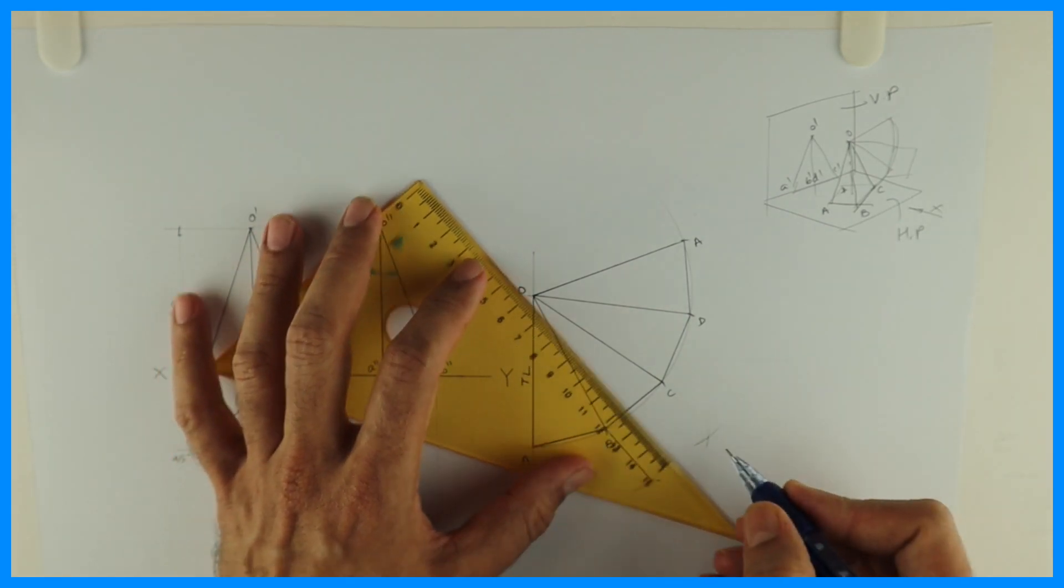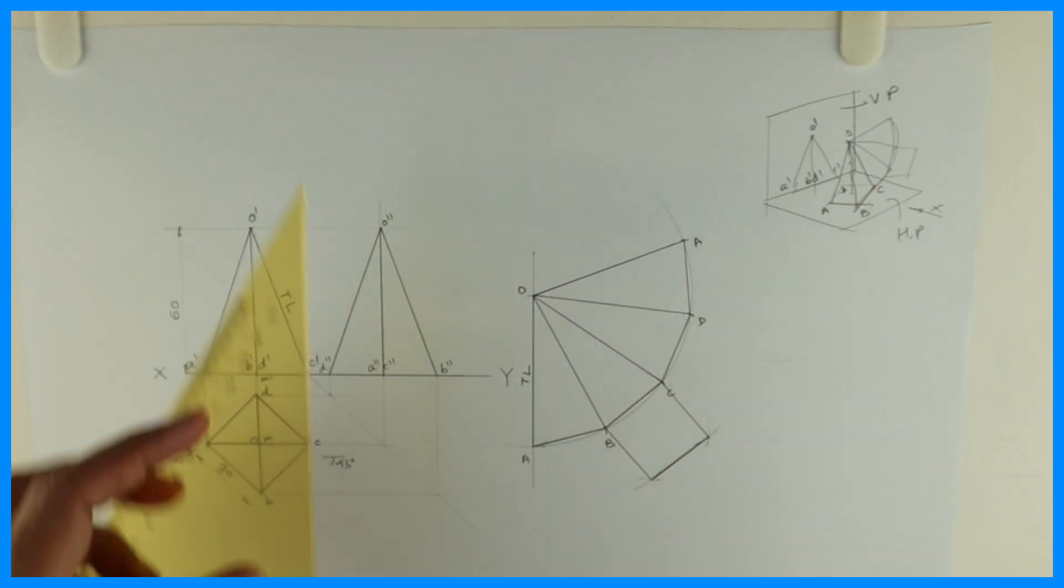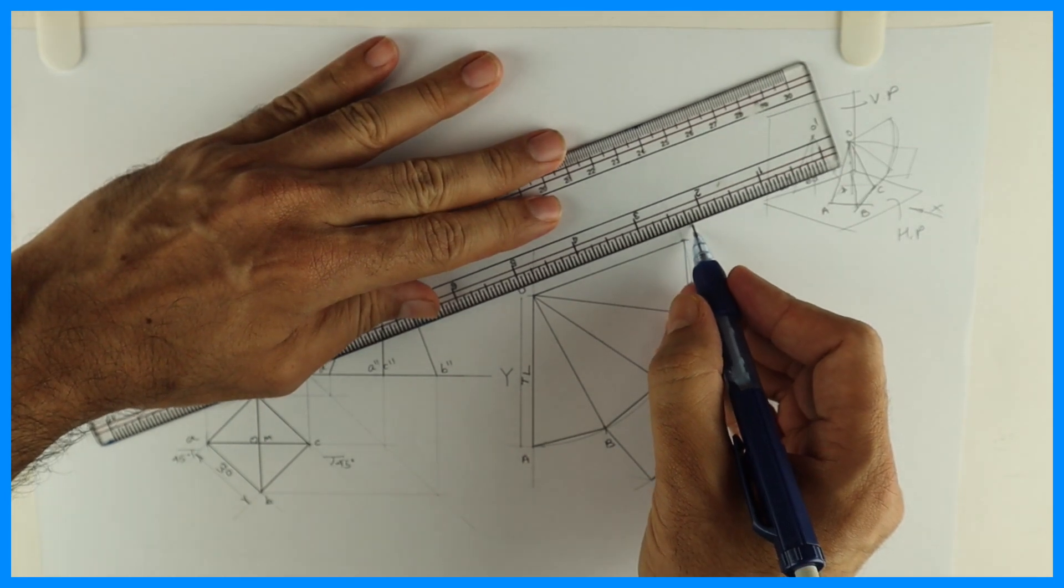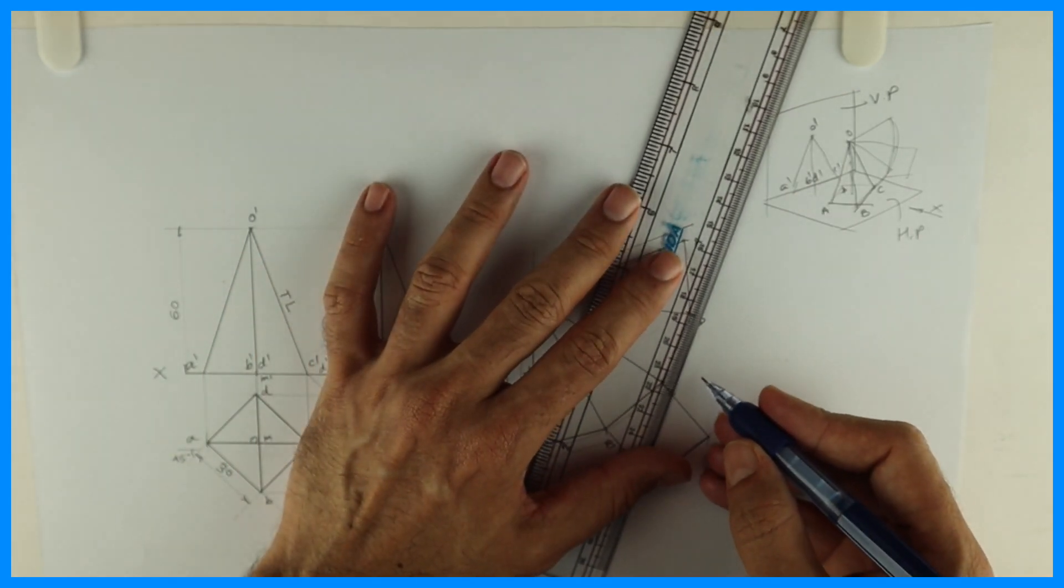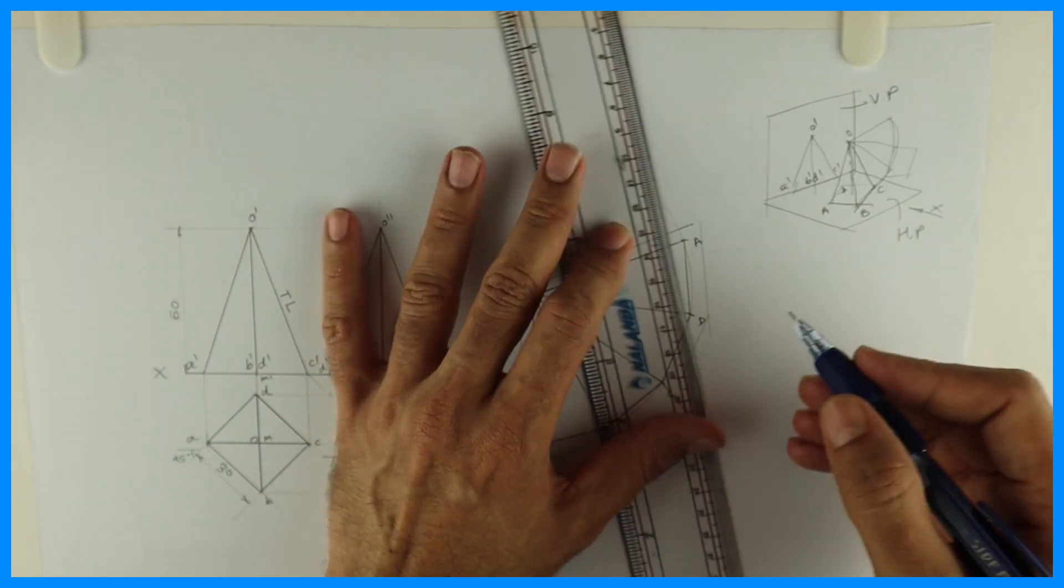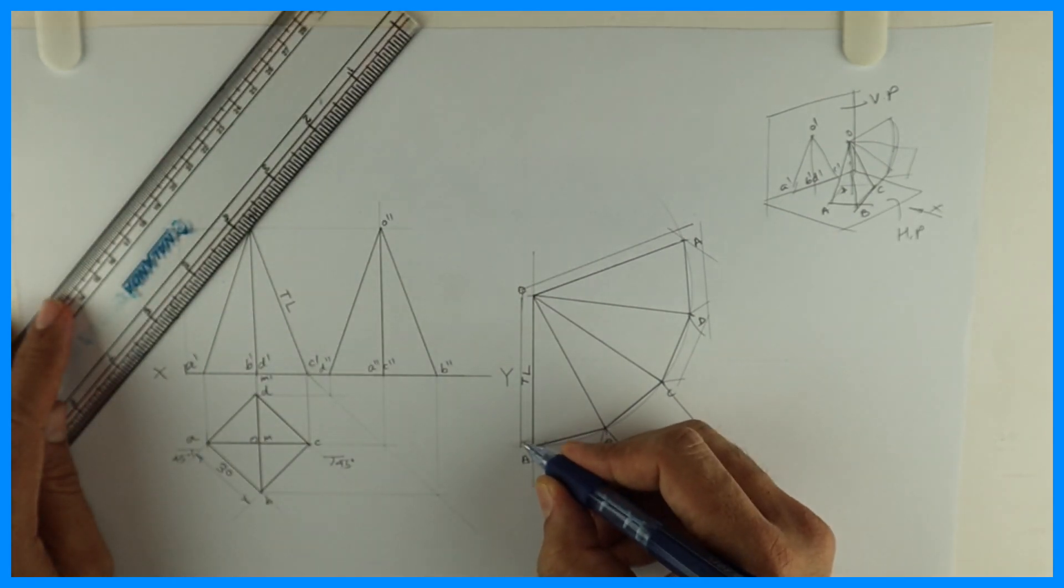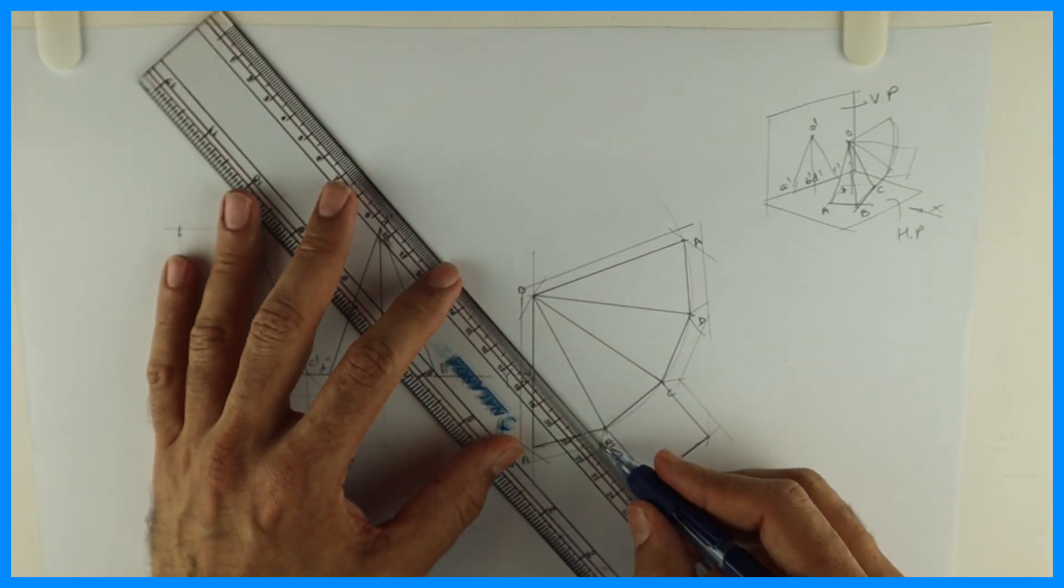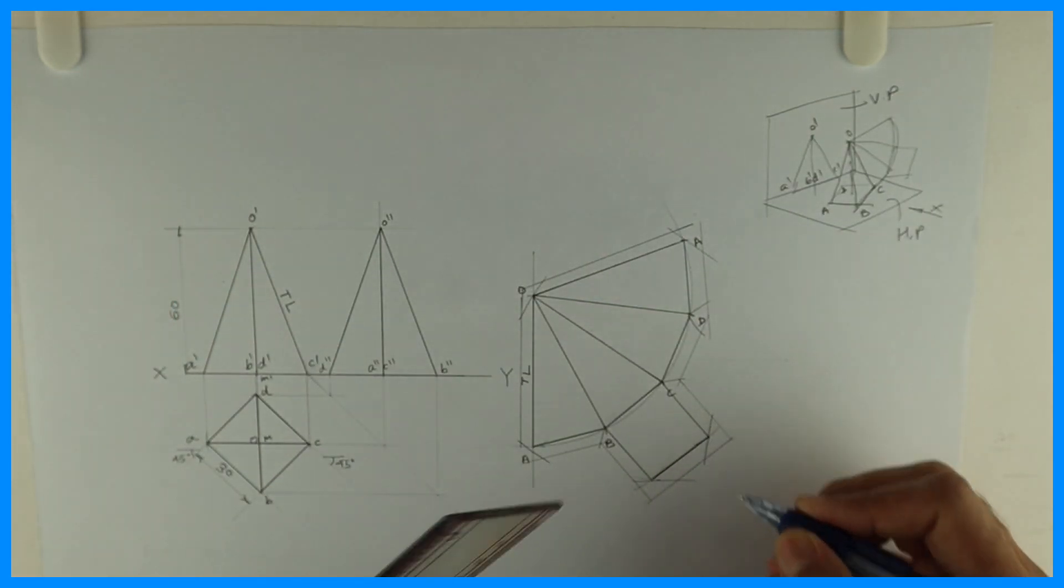When they'll ask you in an exam, draw lateral surface development, you don't have to draw a square. But when they will ask you to draw total surface development or you have to prepare a model, that time you draw full. After drawing this much, what we will do? We will give width. See this. Every corner will have a 45 degree line. So that we can draw. And this width would be somewhere around 5 mm if you're taking it.